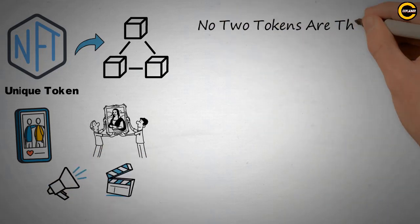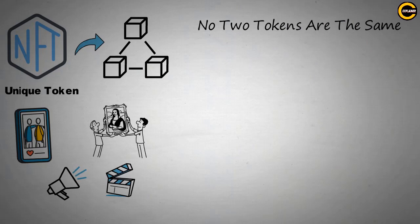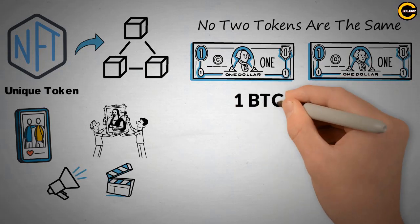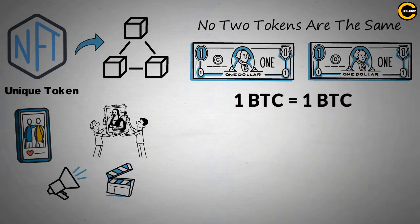The adjective non-fungible means that no two tokens are the same. For example, you can exchange a $1 bill for another $1 bill, or one Bitcoin for one Bitcoin. They are not identical.